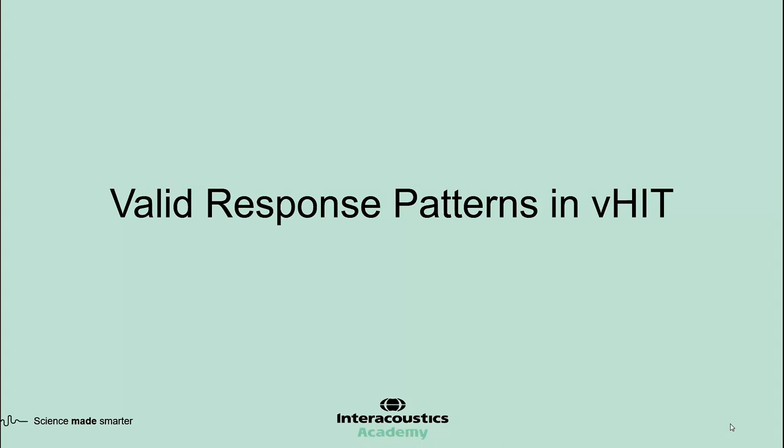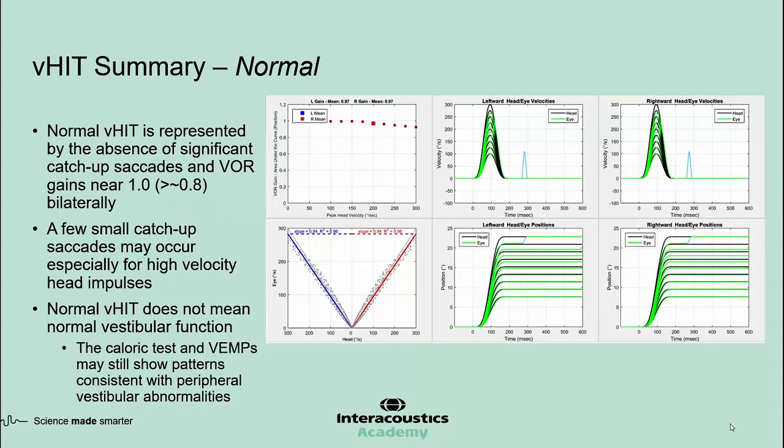With the knowledge of pathophysiology, let's examine which patterns of VHIT results are valid and which are likely artifacts. The first pattern is the normal VHIT pattern, represented by the absence of significant catch-up saccades and VOR gains greater than 0.8 bilaterally. A few small catch-up saccades may occur, especially for high-velocity head impulses. Normal VHIT does not mean normal vestibular function — the caloric test and VEMPs may still show patterns consistent with peripheral vestibular abnormalities.